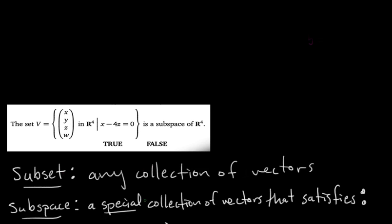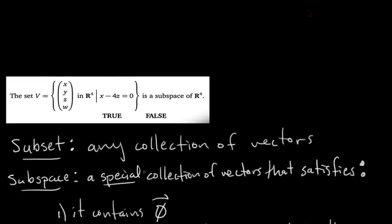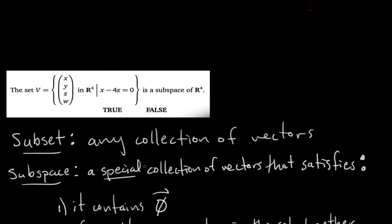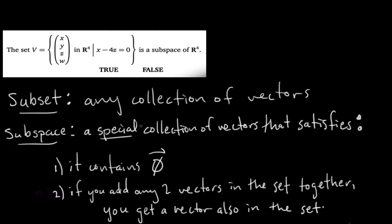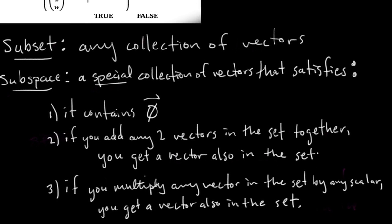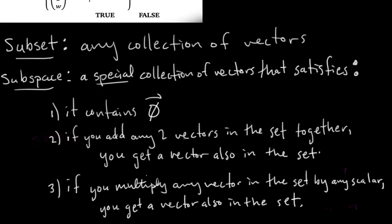A subspace is a special collection of vectors that satisfies the following three conditions. The first one: it has to contain the zero vector. The second one: if you add any two vectors in the set together, the sum is another vector that's still in the set — this is called being closed under addition. The third one is called being closed under scalar multiplication, meaning if you multiply any vector in the set by any scalar, that scaled vector is still in the set.